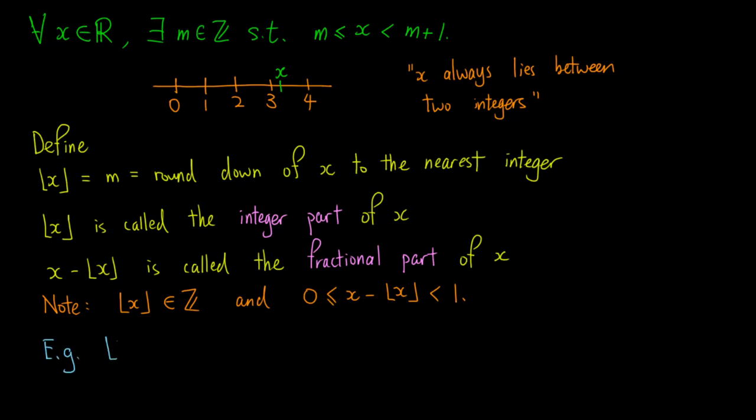For example, the floor of 3.4 is 3. The floor of 2 is 2, because 2 is itself an integer. And the floor of negative 41 over 7 is negative 6, because 41 over 7 is about 5.86.